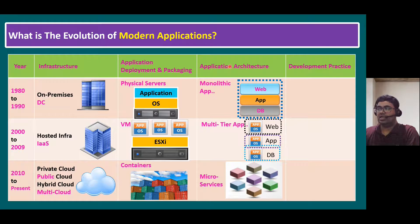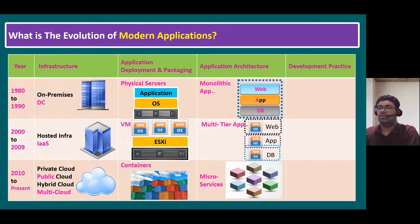The application architecture used on physical servers during that era is considered monolithic architecture. A monolithic application means one server running with one application — you could run the web server, application, and databases all within that single server. This was the standard application architecture in the earlier days.